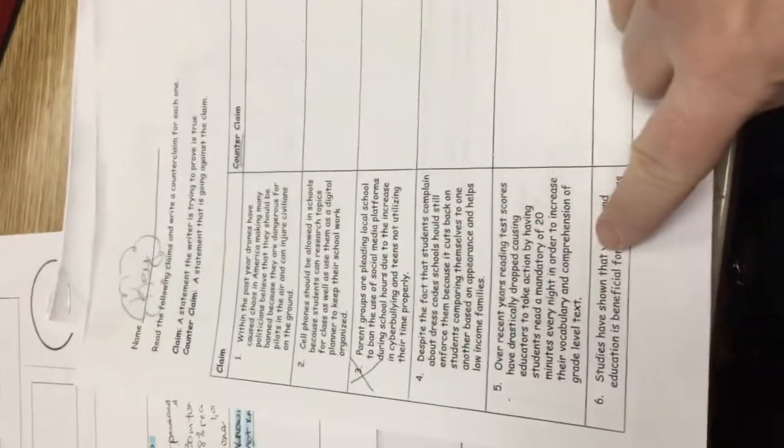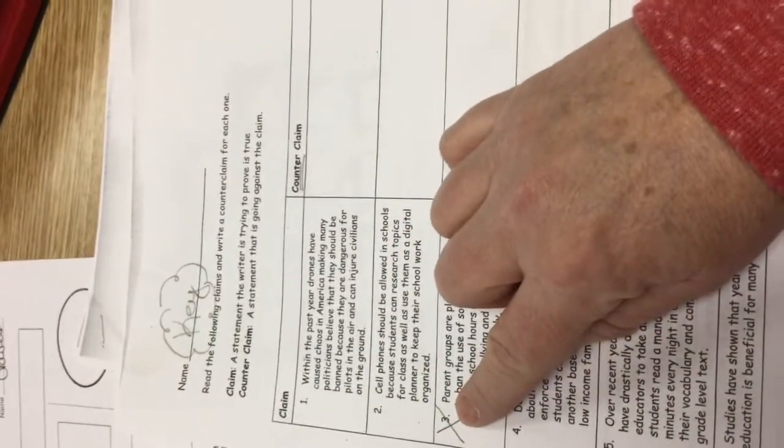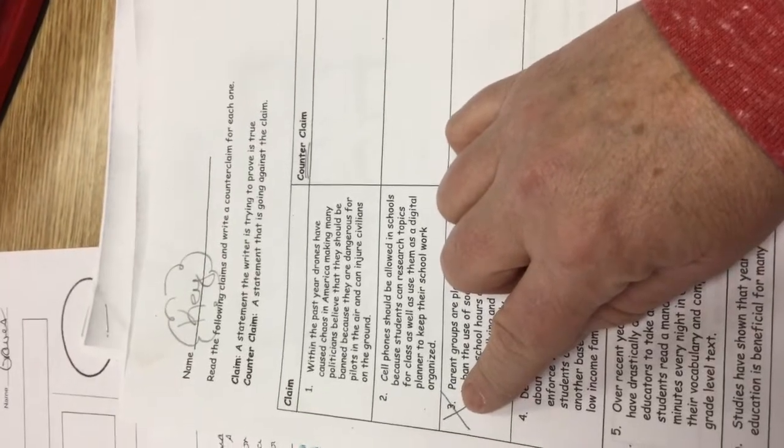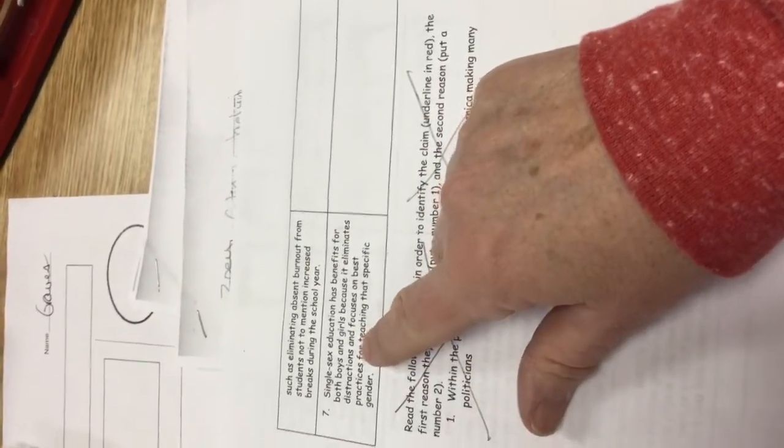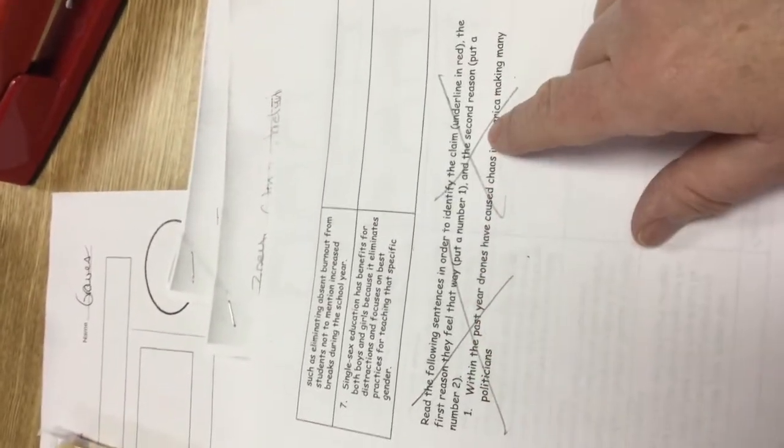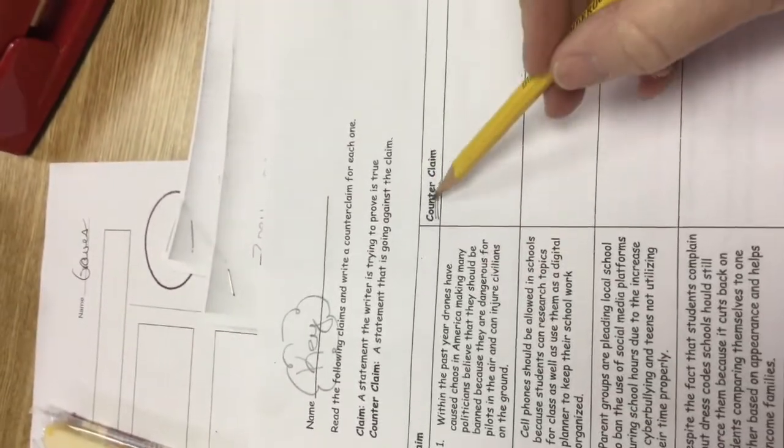Good morning everybody, this is Miss Graves. This is going to be your e-learning for the day. On the left hand side you have a list of claims. You see number three? You're not going to do number three. When you flip the paper over on the back side you do have the rest of number six and then you've got number seven. We're gonna do number one and number seven together.